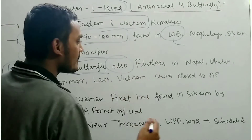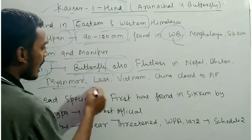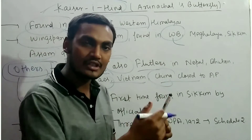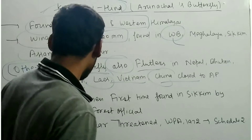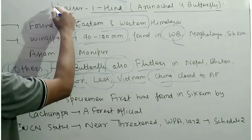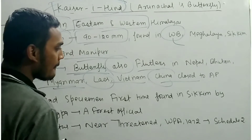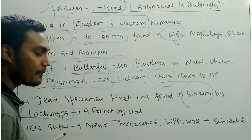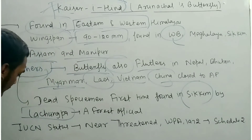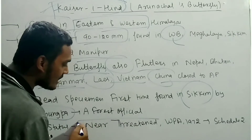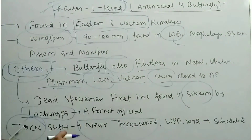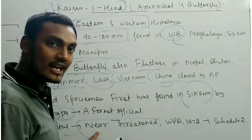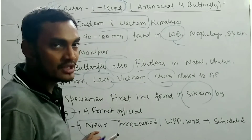This butterfly also flutters in Nepal, Bhutan, Myanmar, Laos, Vietnam, and southern China, which is close to Arunachal Pradesh. The first specimen of Kesar Ayind was found in Sikkim, discovered by a Lachung forest official. Its IUCN status is Near Threatened, which is why Arunachal Pradesh government took steps to protect the species as it risks extinction without conservation.